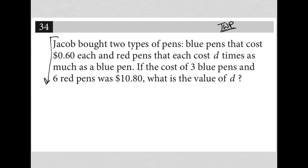The first sentence here says Jacob bought two types of pens, blue pens that cost 60 cents. I'll write B equals 0.6 for 60 cents. And red pens that each cost D times as much as a blue pen. So R for red is equal to 0.6D.